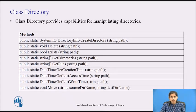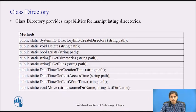The next class is the directory class. It has static methods for creating, moving, and enumerating through directories and subdirectories. This class cannot be inherited. The CreateDirectory method creates all directories and subdirectories in the specified path unless they already exist.